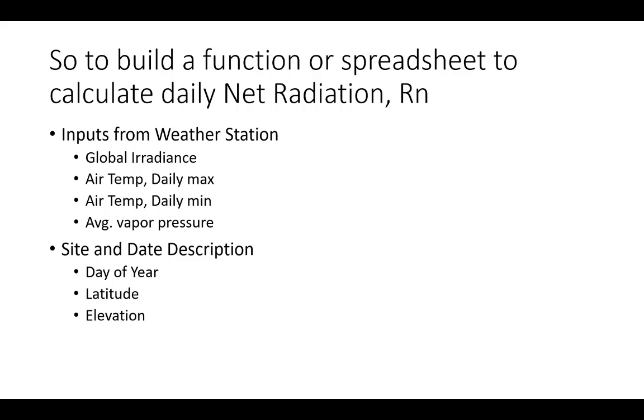If we think about it, you're going to need a lot of inputs to do a daily net radiation calculation. You're going to need from the weather station: global irradiance, air temperature—both maximum and minimum—and the average daily vapor pressure, humidity in the air. Then you're going to need the day of year from a calendar, between 1 and 365. You're going to need your latitude and your elevation. So it's a lot of information.